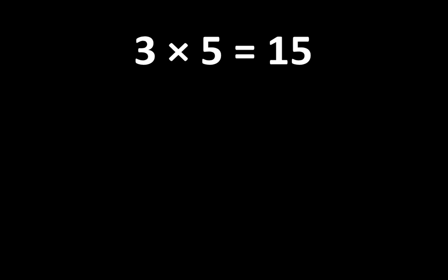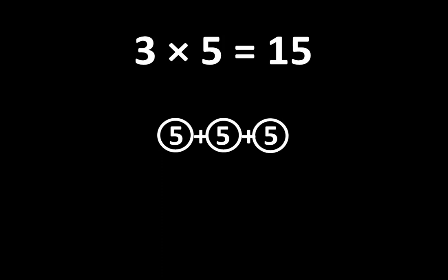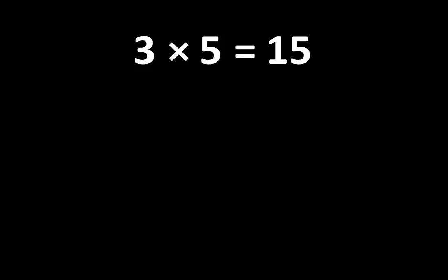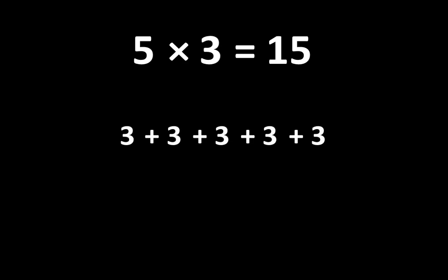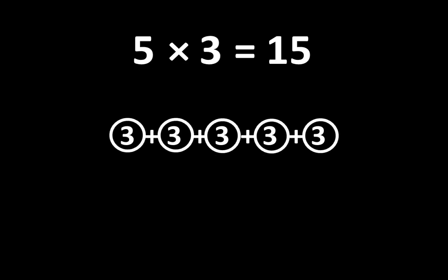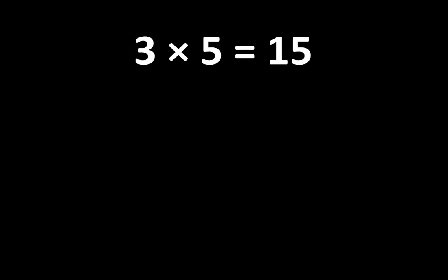So we can think of 3 times 5 as 3 groups of 5. You may recognize this as repeated addition. And if we count the groups of 5, we can see that there are 1, 2, 3 groups of 5, and the total of 3 groups of 5 is 15. And if we count the groups of 3, we can see that there are 1, 2, 3, 4, 5 groups of 3, which is equal to 15. 3 times 5 is equal to 15.